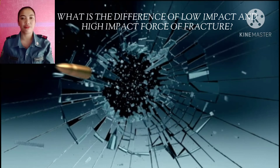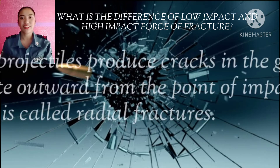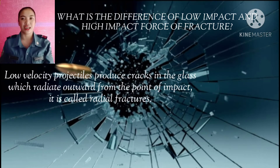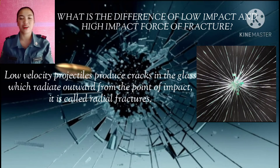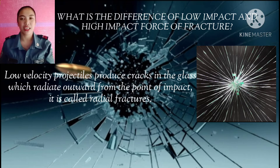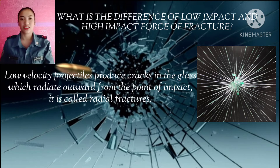What is the difference between low impact and high impact force fractures? Low velocity projectiles produce cracks in the glass which radiate outward from the point of impact — these are called radial cracks or radial fractures. With low velocity projectiles, only radial fractures are visible; you cannot determine a hole, and concentric fractures are not present.